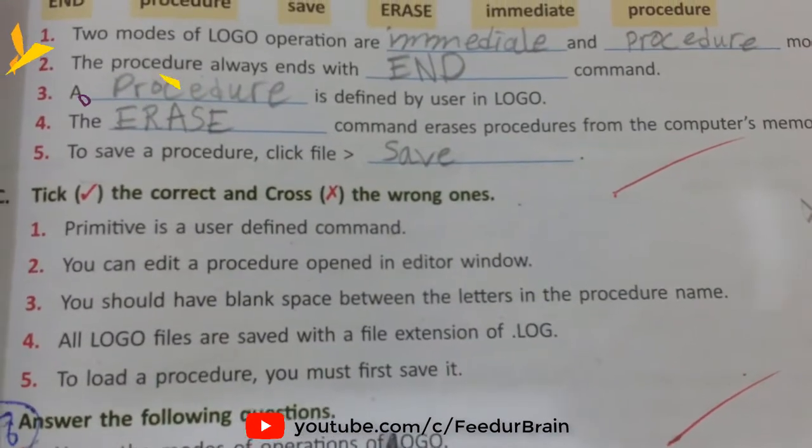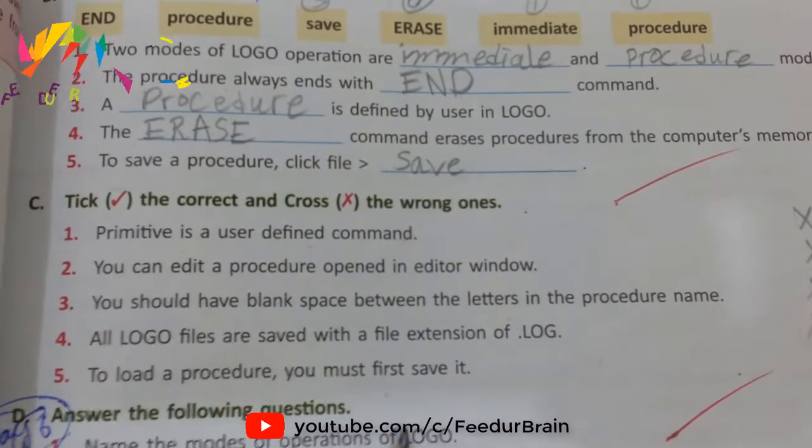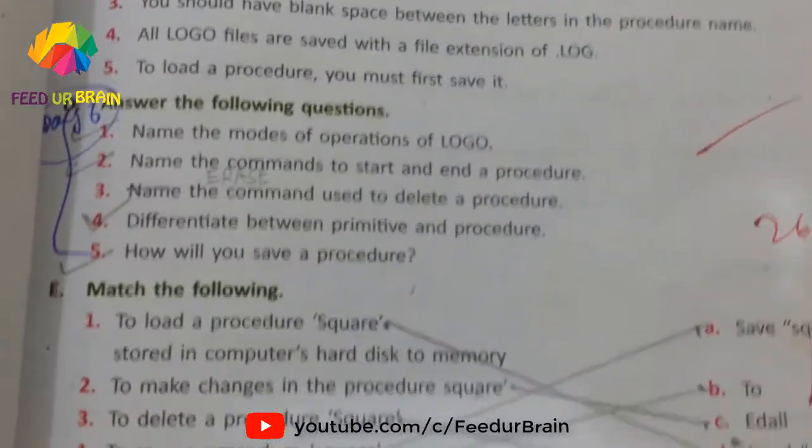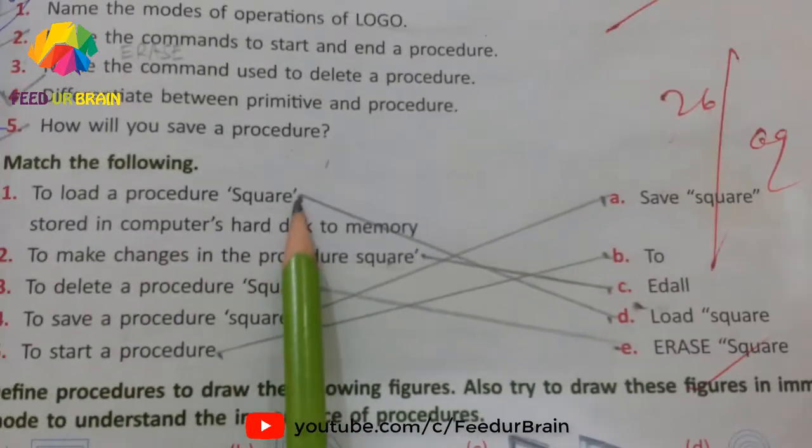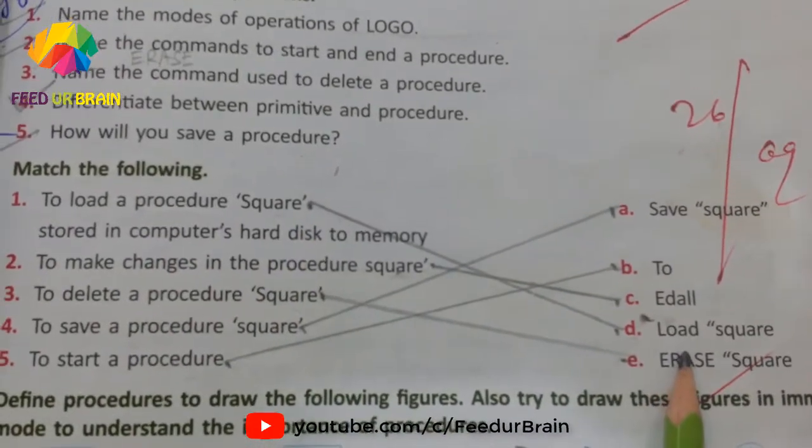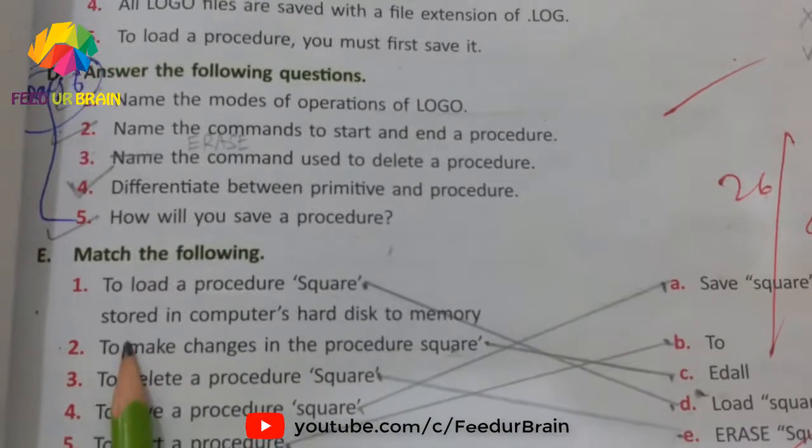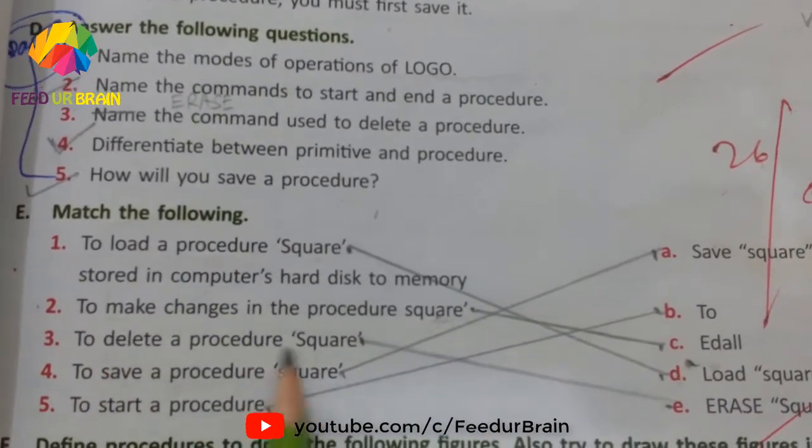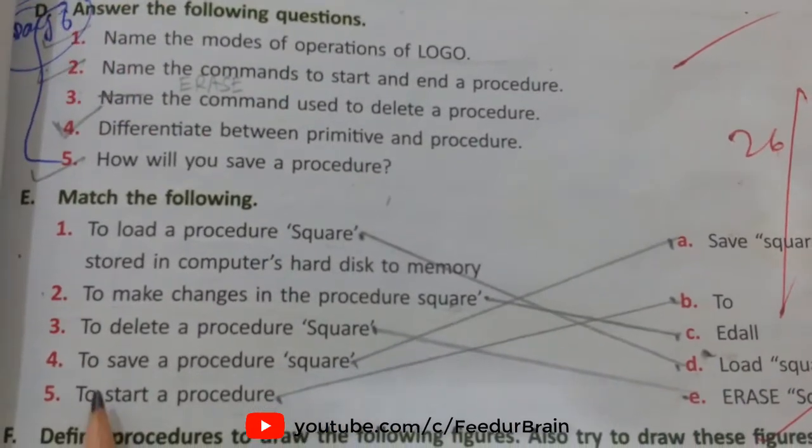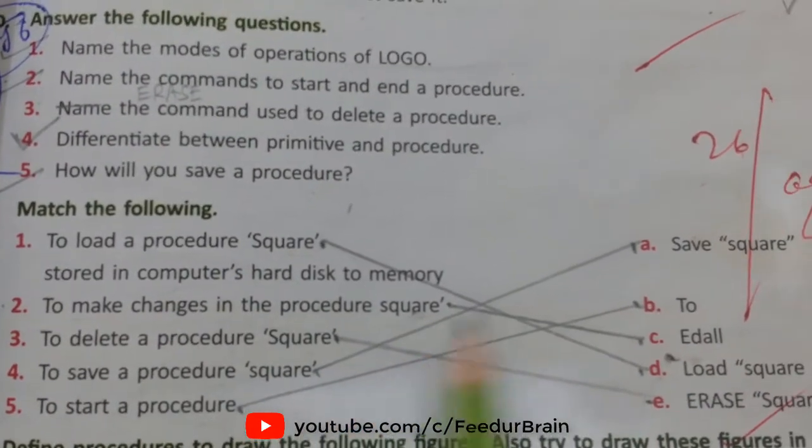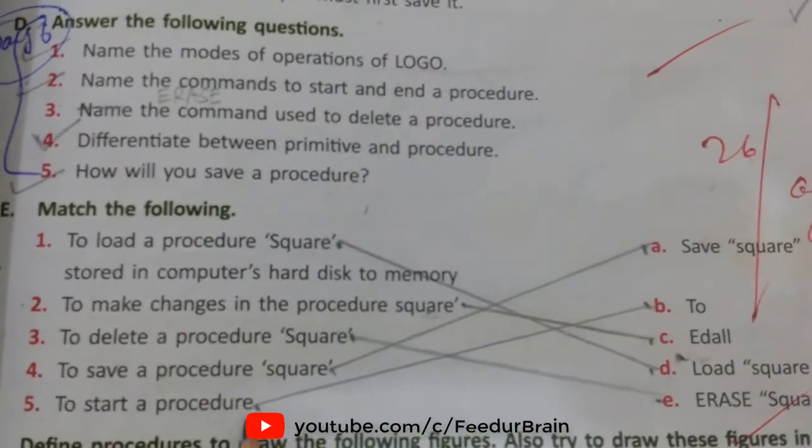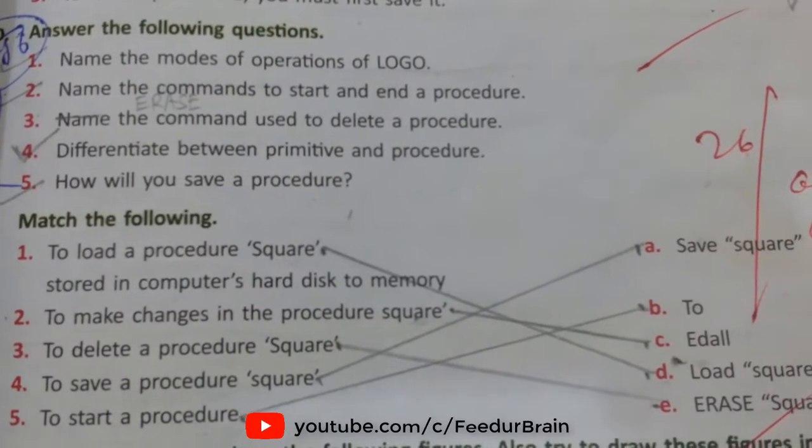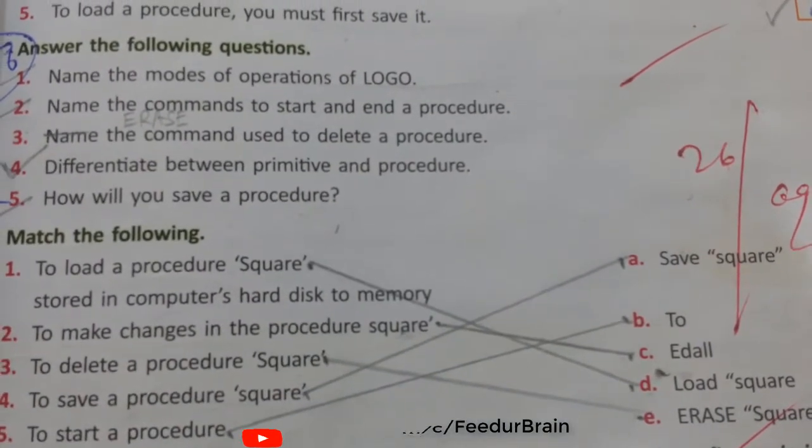You can see the exercise students, you have your e-books, you can complete it. Match the following: To load a procedure square - load square. To make changes in the procedure square - edit. To delete a procedure square - erase square. To save a procedure square - save square. To start a procedure - type the procedure name. You have four questions to complete in your book. Allah Hafiz.